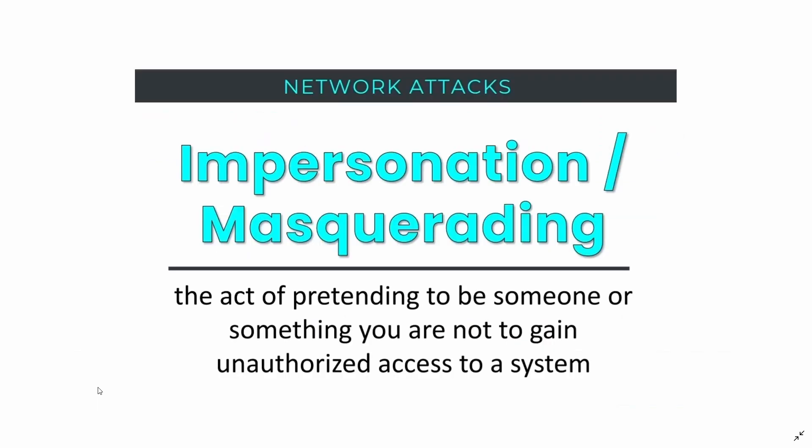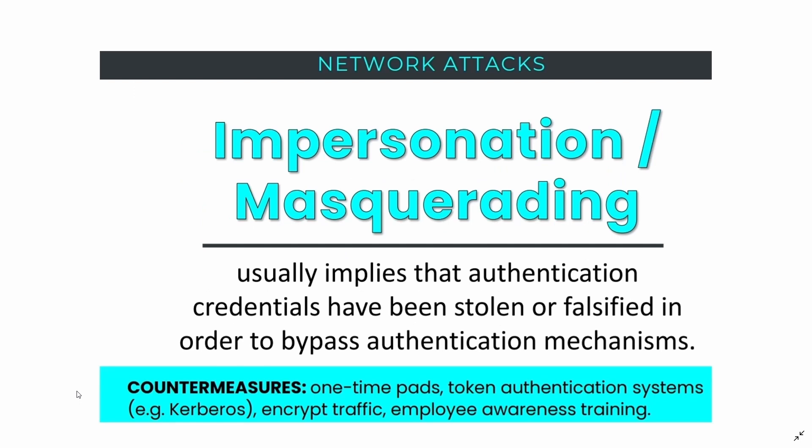Another type of network attack is impersonation or masquerading — the act of pretending to be someone or something you are not to gain unauthorized access to a network or system. Impersonation attacks usually imply that authentication credentials have been stolen or falsified to bypass authentication mechanisms. Countermeasures include one-time pads, token authentication systems, encrypting traffic, and employee awareness training.